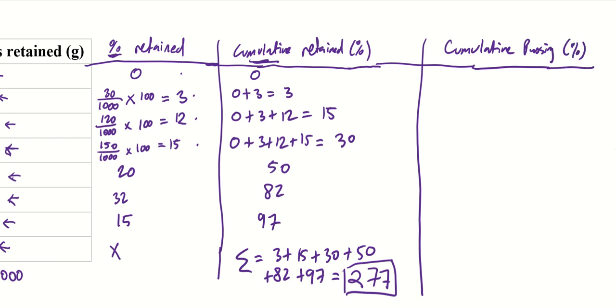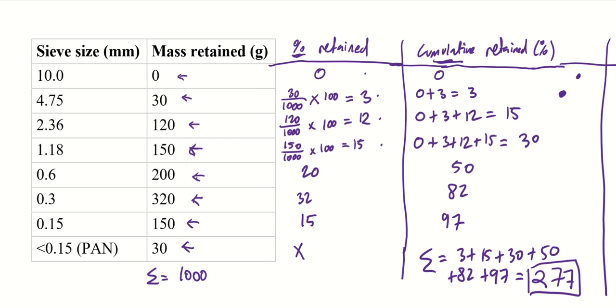And to calculate that column, what we do is 100 minus the value that we have in this column. So 100 minus 0, that's 100. If 0% is retained, then it means that 100% is passing. That makes sense. Again 100 minus 3, 97. So if 3% is retained, then 97% is passing. So 97% of your aggregates pass through the sieve of size 4.75. And you just keep on doing the same process.